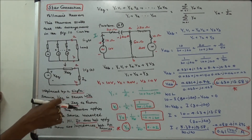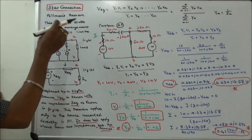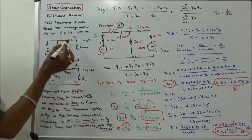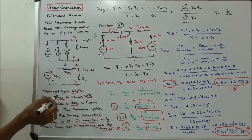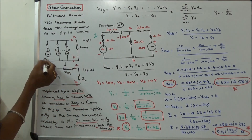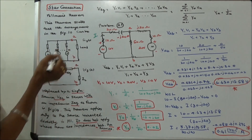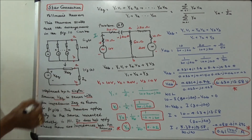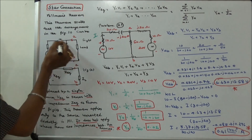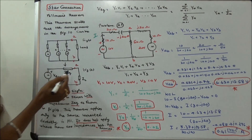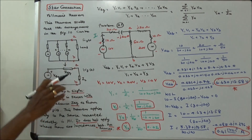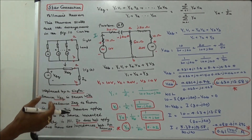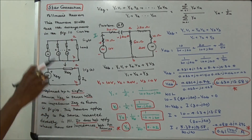This class we discuss the application of Millman's theorem in an unbalanced star-connected load. This is a simple network consisting of n sources and n impedances. The sources are converted into an equivalent voltage source and the impedances are converted into Z equivalent. Once we calculate V equivalent, we can easily calculate the current flow through each branch. That is the main advantage of Millman's theorem.